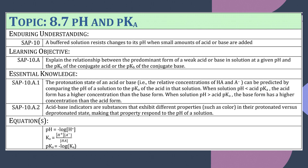Today's objective: explain the relationship between the predominant form of a weak acid or base in solution at a given pH and the pKa of the conjugate acid or the pKb of a conjugate base. We're going to look at the protonation of an acid or a base and how you can tell what it is based on using something called an indicator.